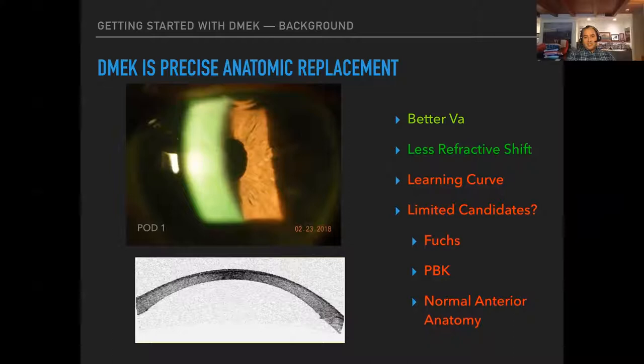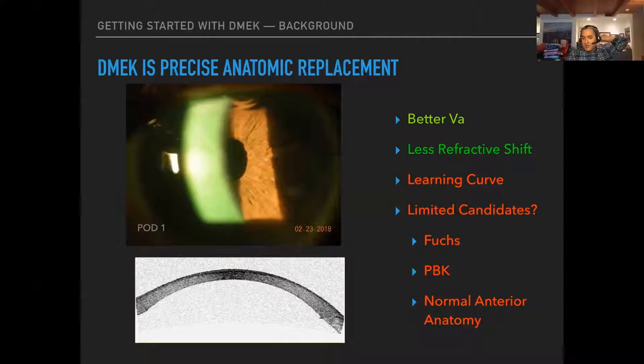The beauty of DMEK is that it's precise anatomical replacement. On this anterior chamber OCT you can see a clear, thin, compact stroma — this is a patient post-op day one that I did just last week, and this is a patient who has an Ahmed tube that I trimmed. You can't get these kind of results with DSAEK. You have less refractive shift. The downsides are the learning curve, some limitation in candidates, and you need a somewhat normal anterior anatomy — no anterior chamber lens.